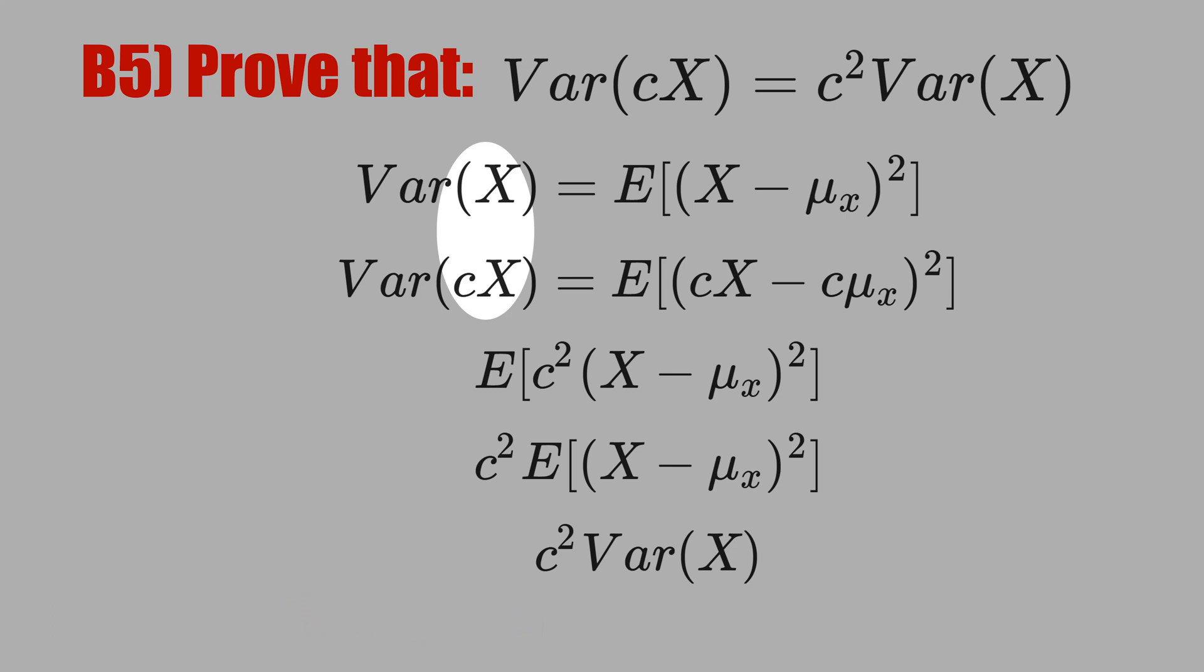Let's replace X by cX. We have to do the same in the definition, and the μ_X becomes c times μ_X. c is a common factor here. We can put it outside of the parentheses and square, like here.